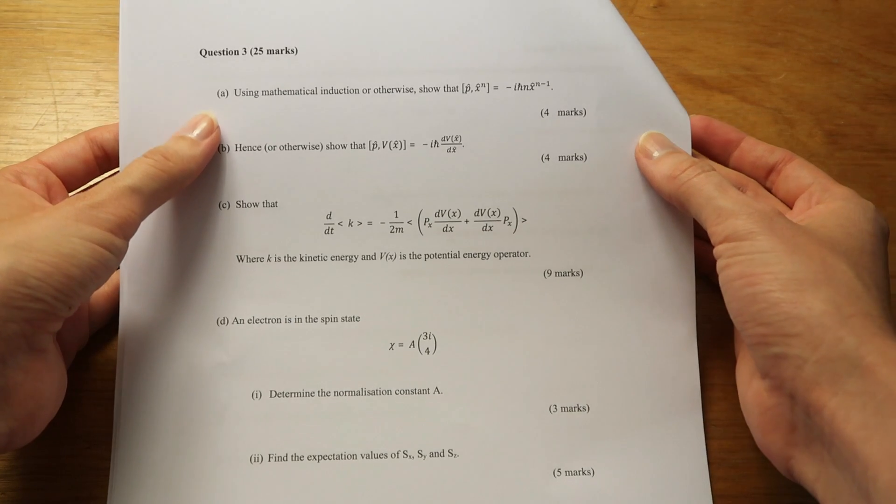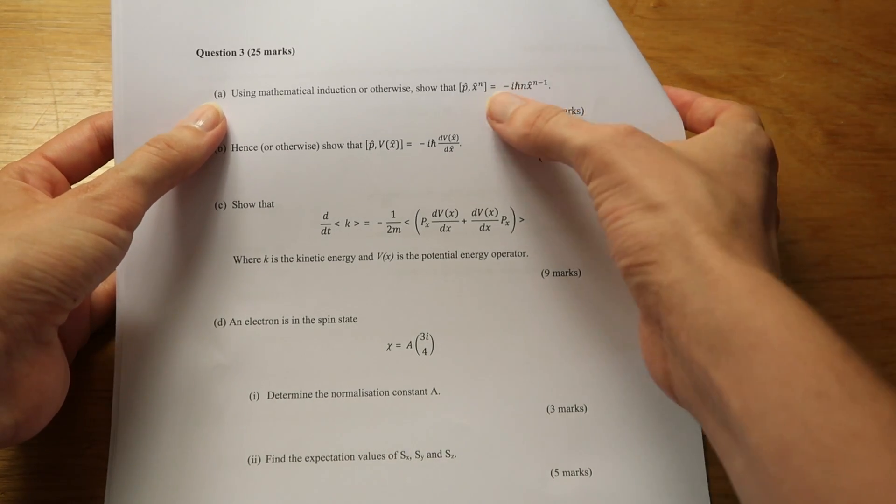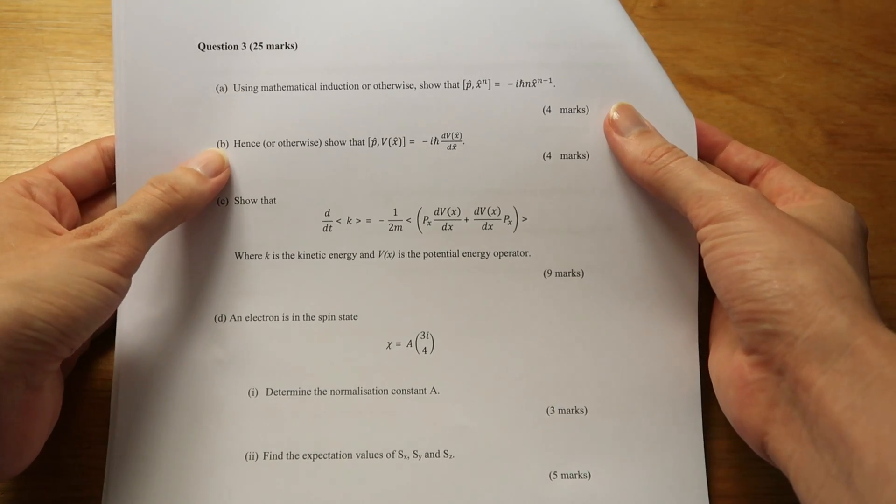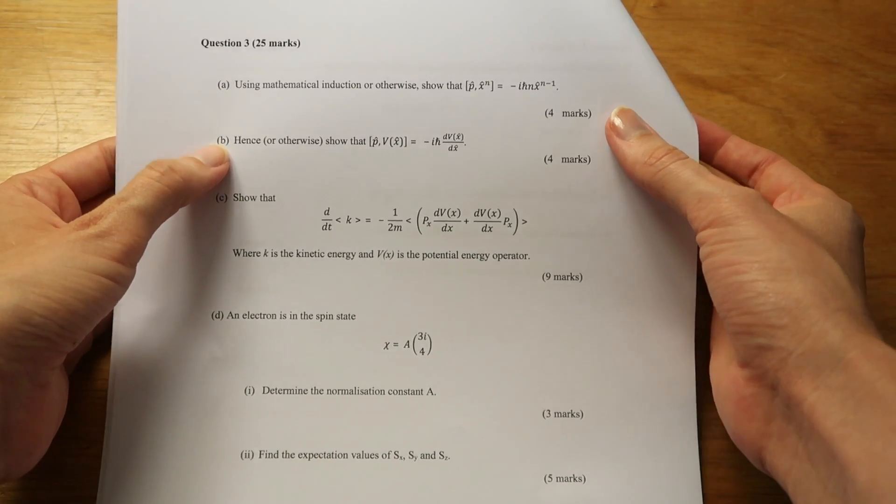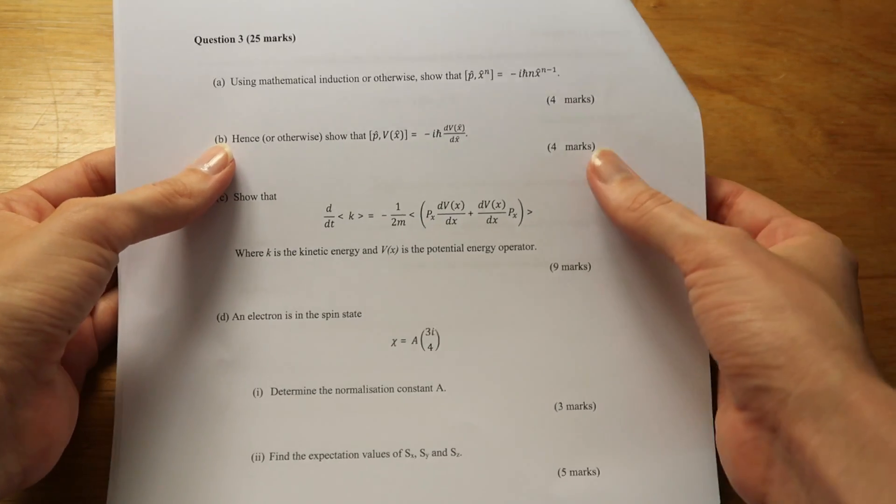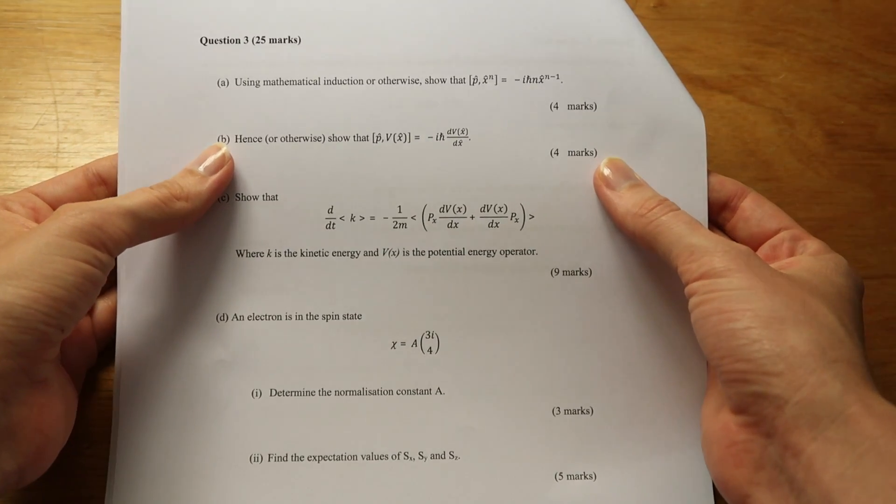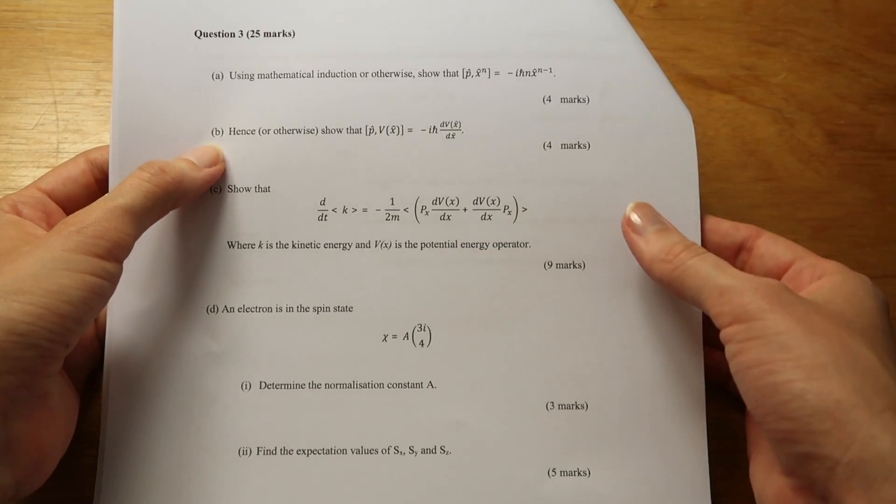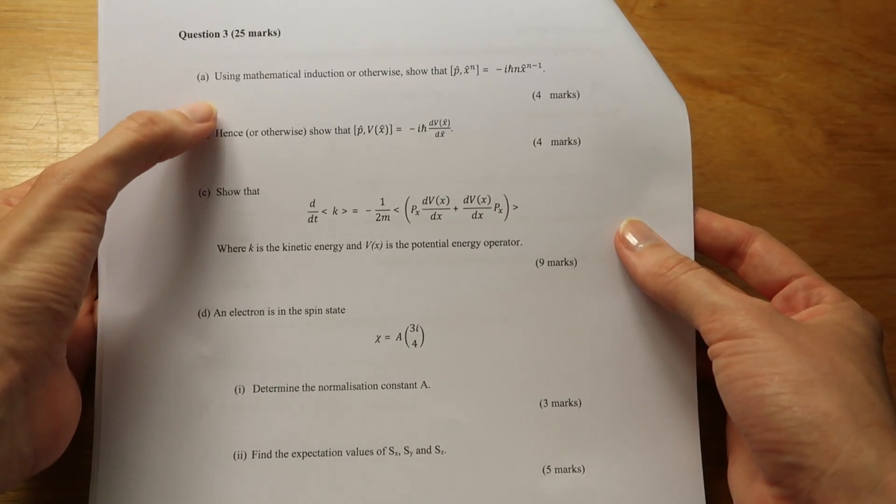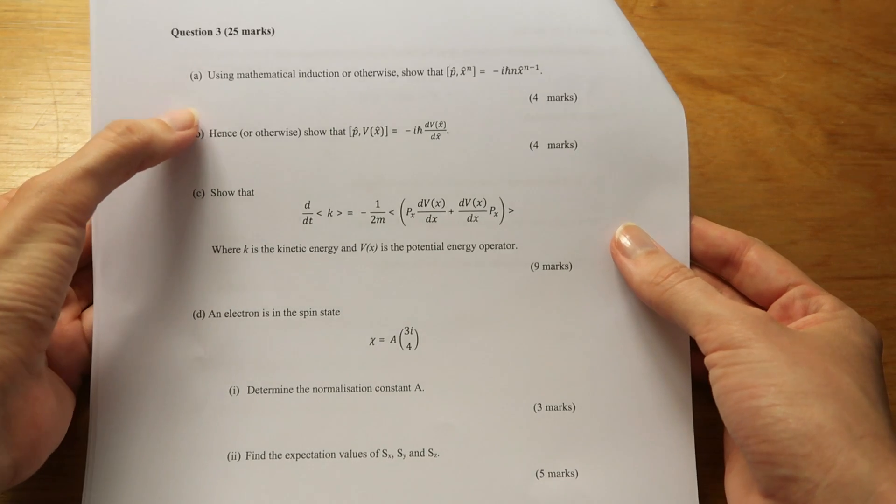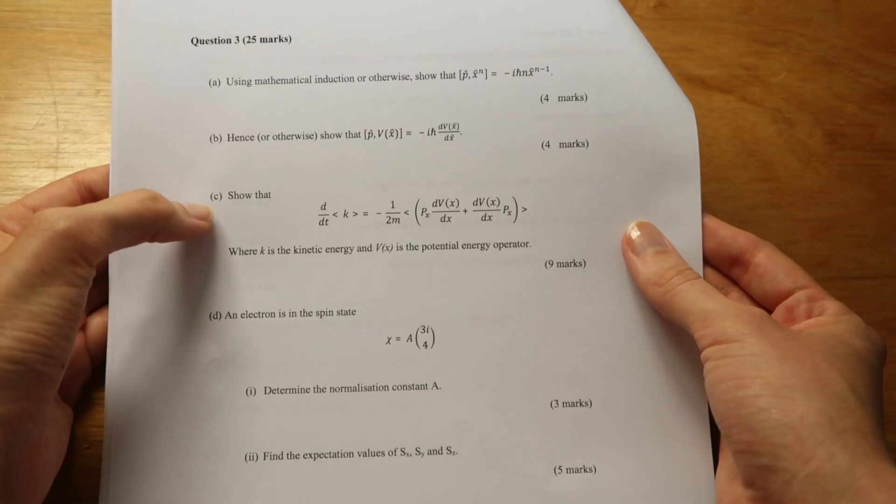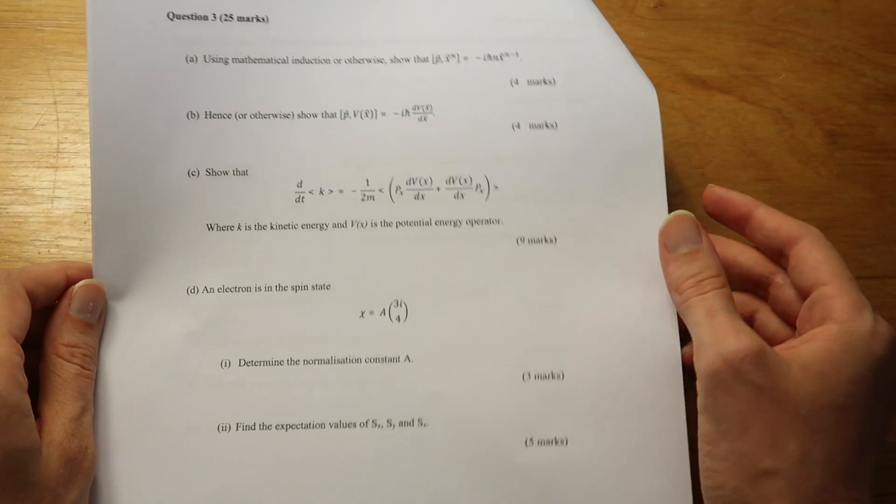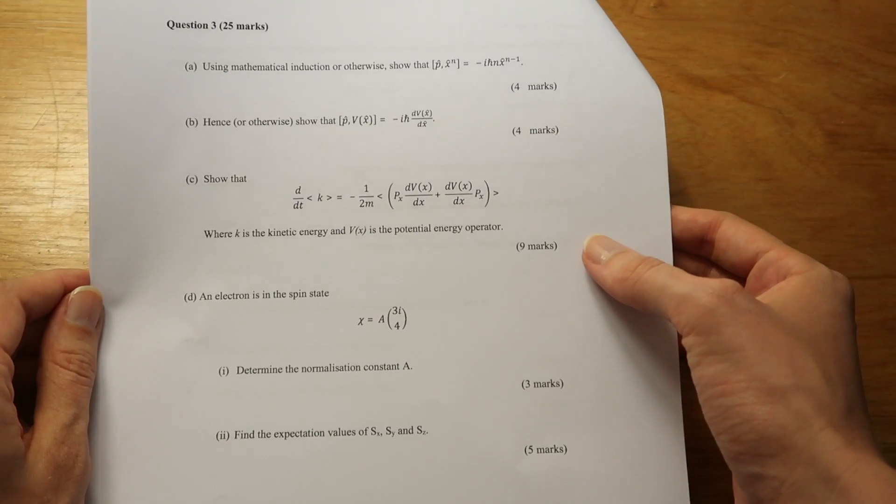Using mathematical induction or otherwise show that this is true. The classic or otherwise statement means really do it using the way they mentioned at the start, otherwise you've got some crazy idea up your sleeve. I don't know, maybe if you're clever you can think of another way to do it. But usually when they give you a hint like this, it's a good idea to go with the hint.